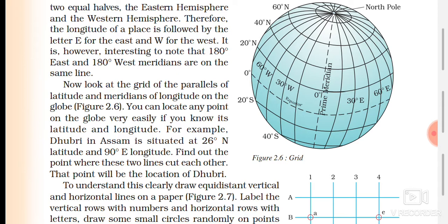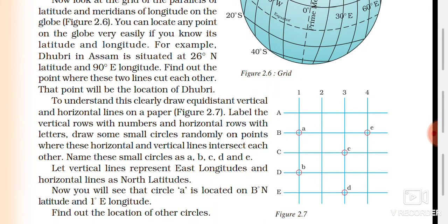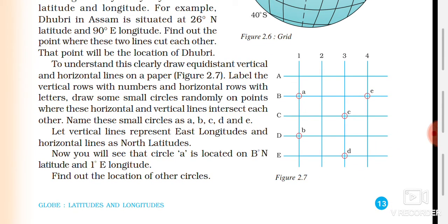Find the point where these two lines intersect — that point will be located at Dubri. To understand this clearly, draw equidistant vertical and horizontal lines on paper, label the vertical rows with numbers and horizontal rows with letters, and draw small circles randomly at intersection points. Name these circles A, B, C, D, E. The vertical lines represent east longitude and the horizontal lines represent north latitude.